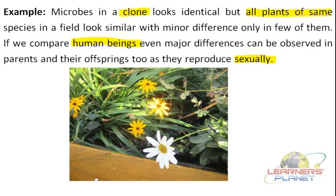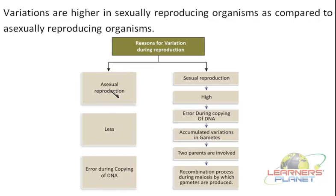Let us summarize the reasons behind variation. Whether it is asexual or sexual reproduction, the initial step is the copying of DNA. In asexual reproduction, once this copying is over, it divides into daughter cells — so the reason behind variation is limited. What is that reason? It is only the error which occurs during the copying of DNA. This may or may not occur, and these variations may or may not be expressed.